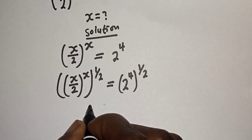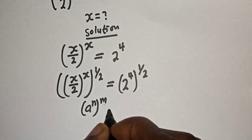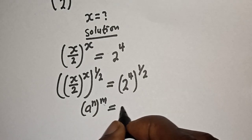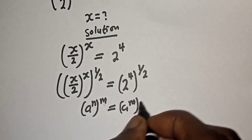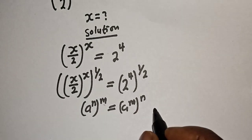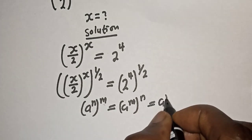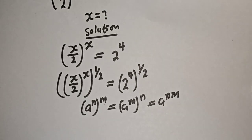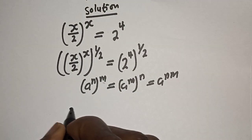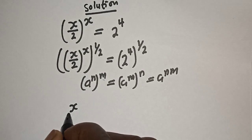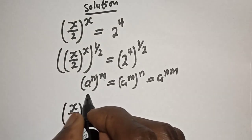Take note of this exponential rule: a raised to power n, to the power of m, is equal to a raised to power n times m.